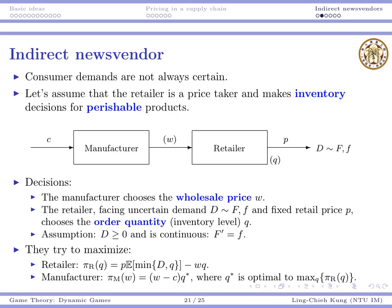Each player wants to maximize their expected profit. For the retailer, this is a newsvendor problem. The retail price is p, and based on order quantity q, the minimum of demand and inventory level is the sales quantity. The expected value of that is expected sales, so the first term is expected sales revenue and the second term is total cost.